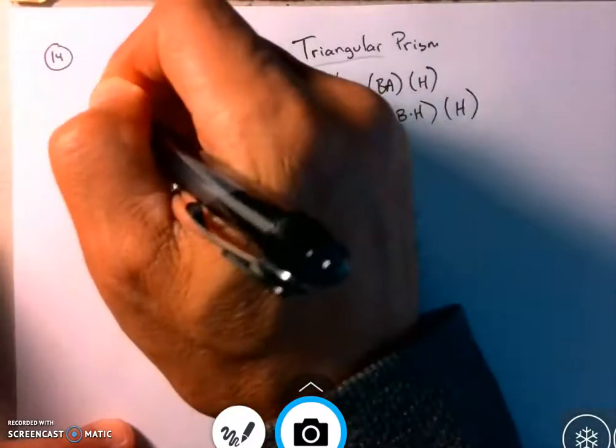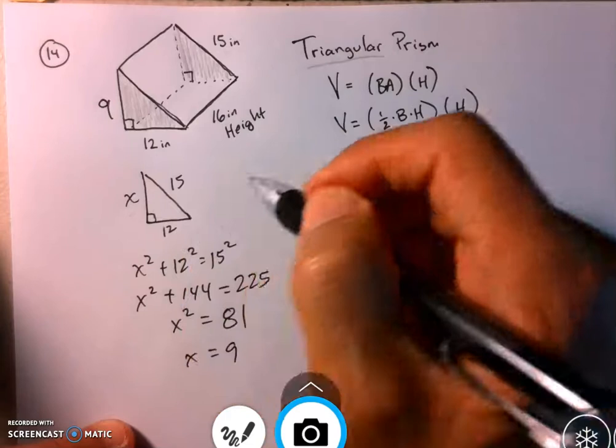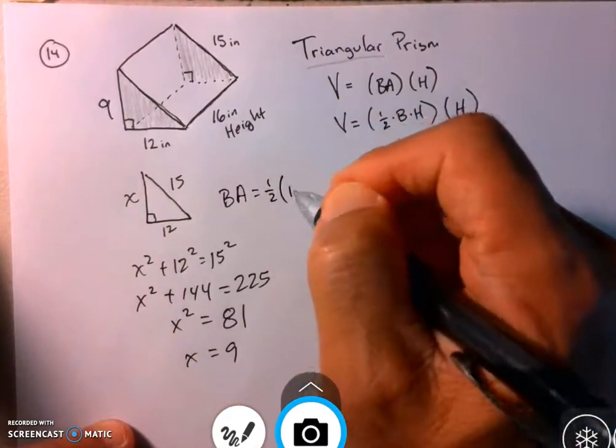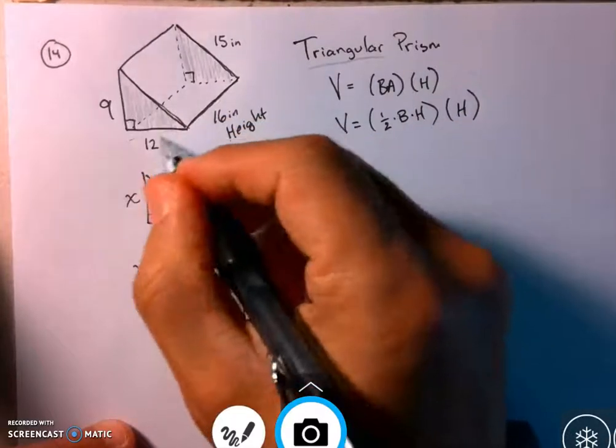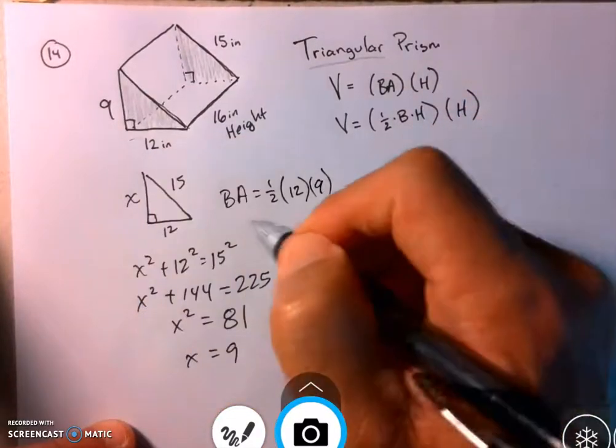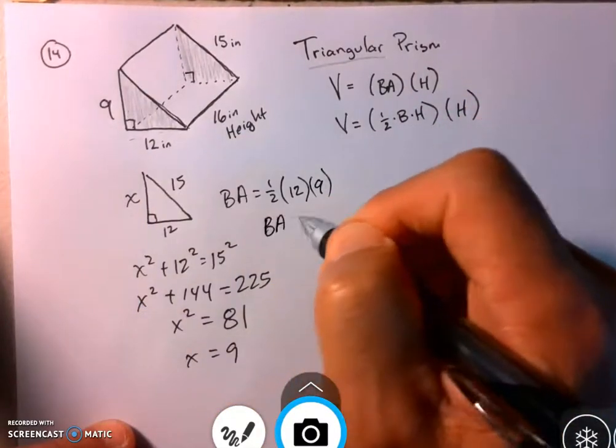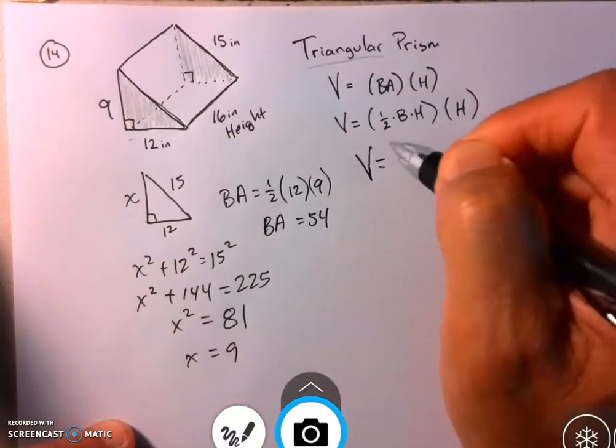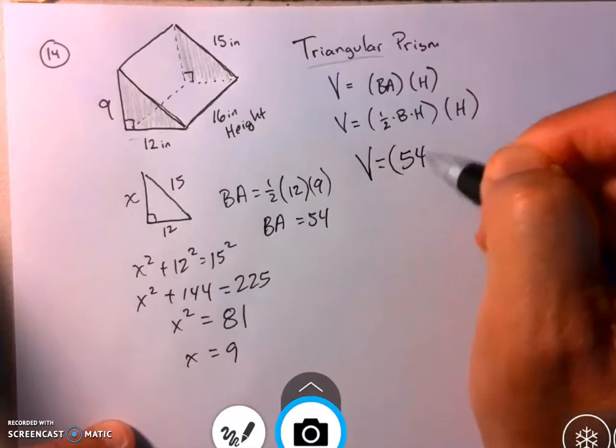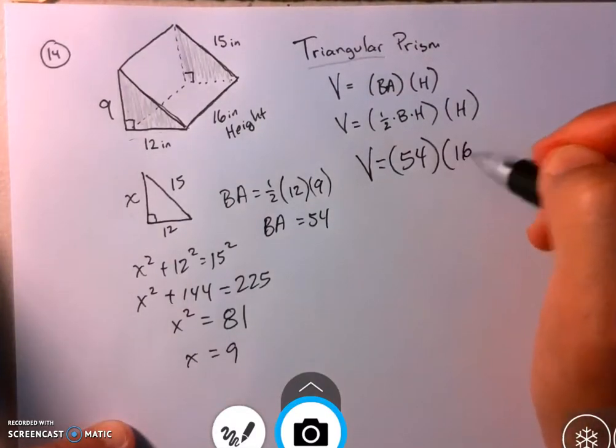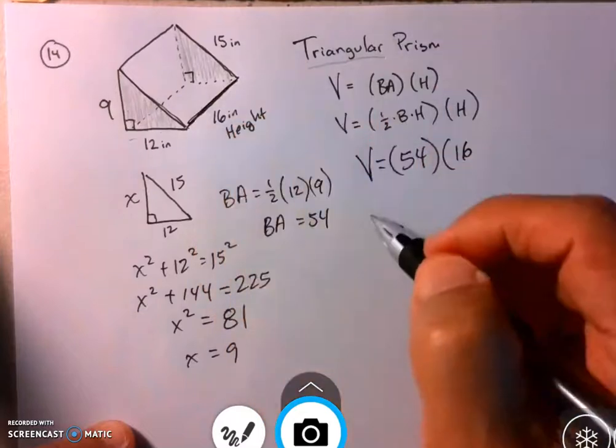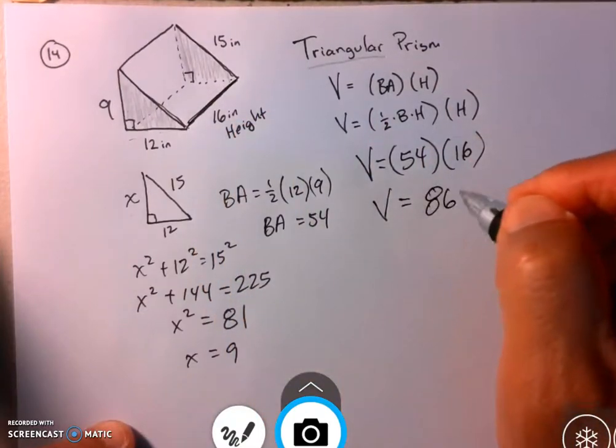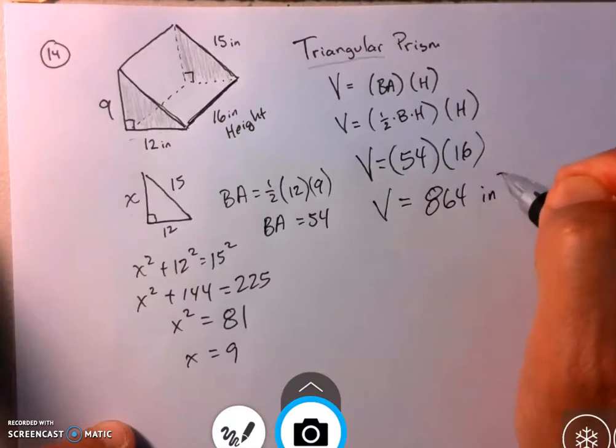So the actual height of the triangle is 9. So now to figure out the area, the base area of this two-dimensional triangle is 1/2 times 12 times height of 9, which is 54. Okay. So the volume, the base area is 54. The three-dimensional height is the 16, right here, front to back. And then when we multiply those two numbers, it will be 864 inches cubed.